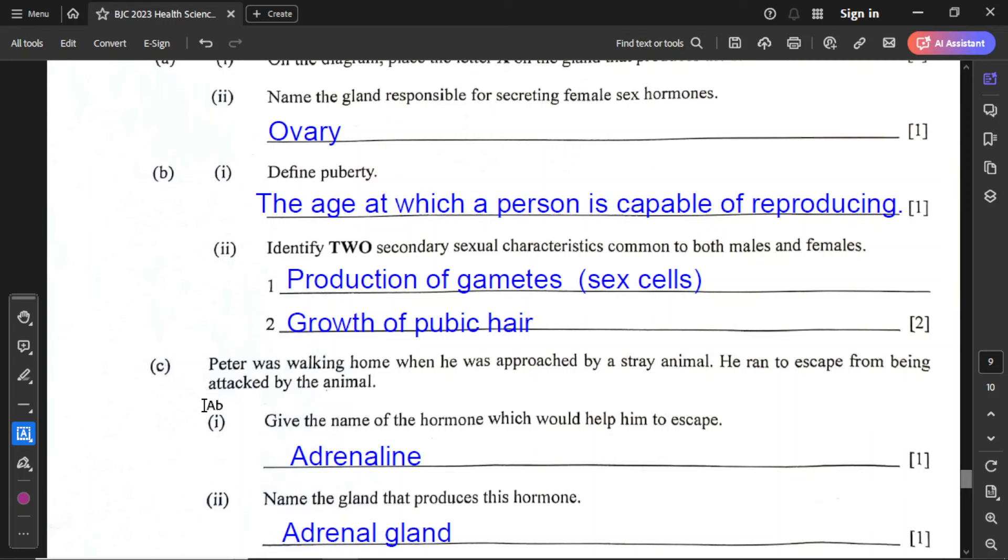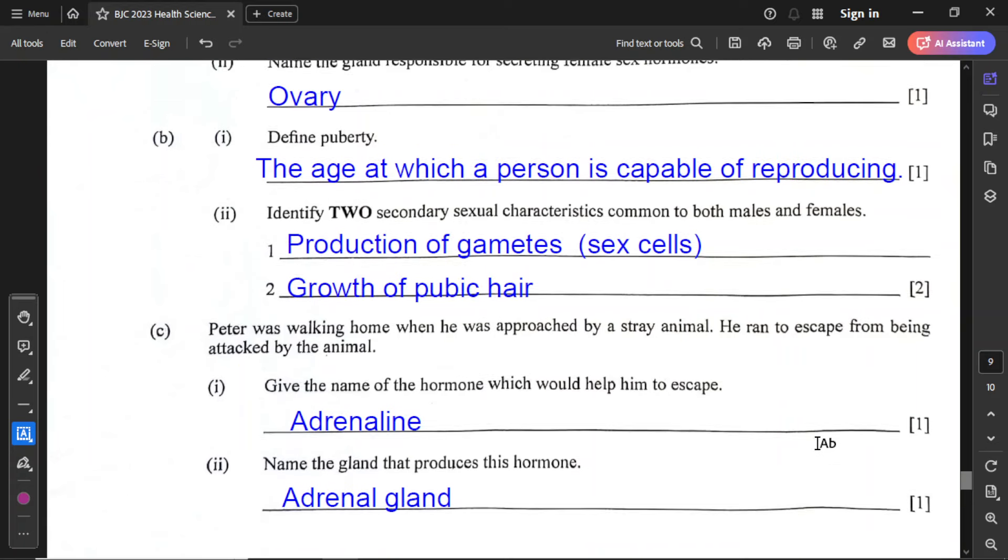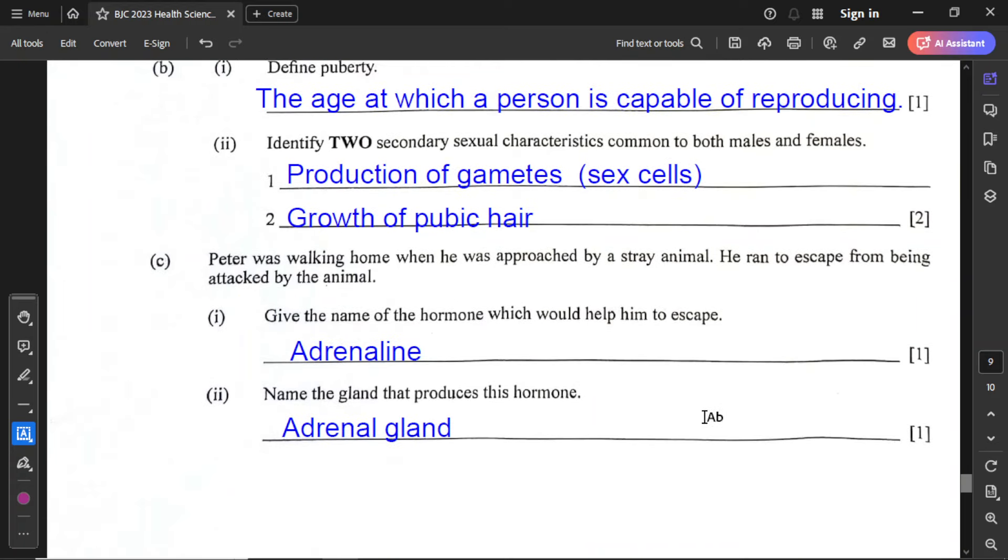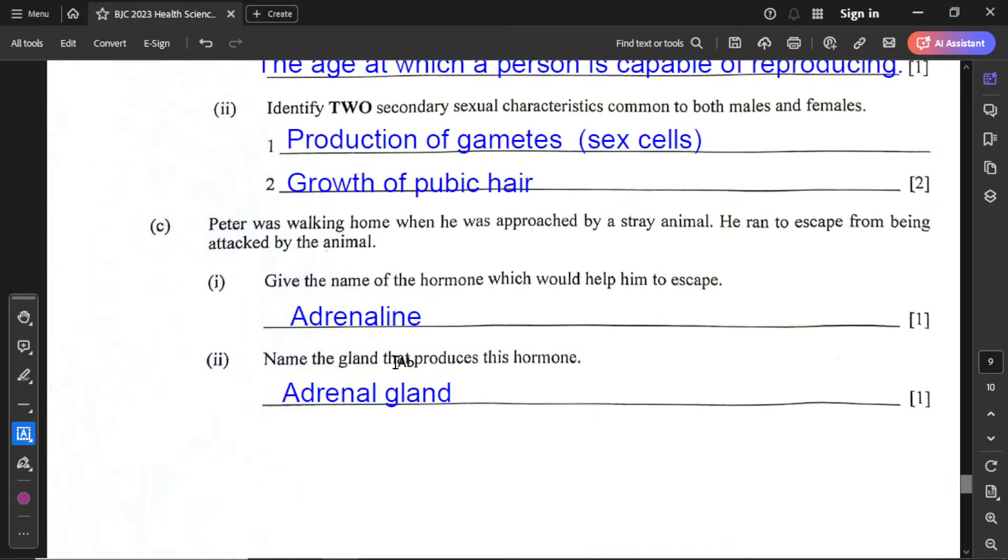For part C, Peter was walking home when he was approached by a stray animal. He ran to escape from being attacked by the animal. Part C1: give the name of the hormone which would help him to escape. That is adrenaline. Part C2: name the gland that produces this hormone. This is the adrenal gland.